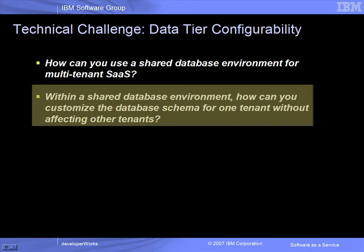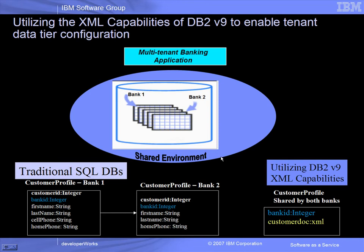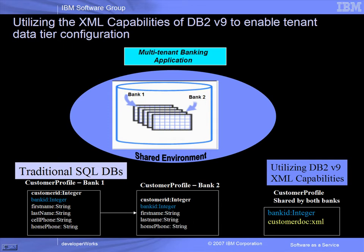One way to provide a very high degree of customization requiring minimal application changes is to use the pure XML capabilities provided in DB2 version 9. In the sample banking application, this scenario will show how to share database schema across two tenant banks through the use of a bank ID column and an XML column in each of the database tables. Through the use of an XML column to hold the tenant-specific data, we are able to configure each tenant's data as simply as you could by using custom columns in an isolated database environment.